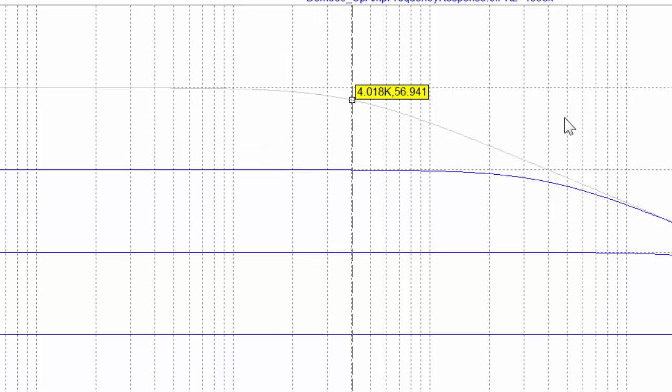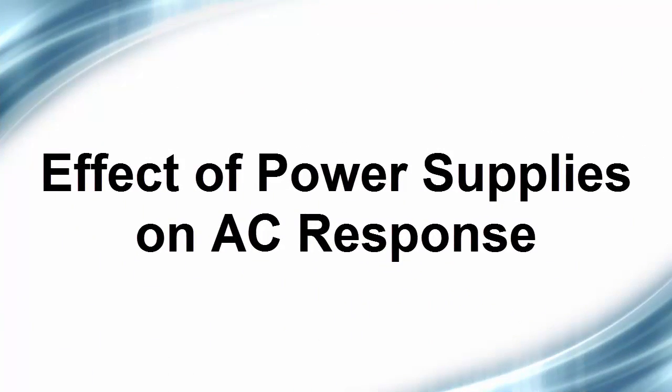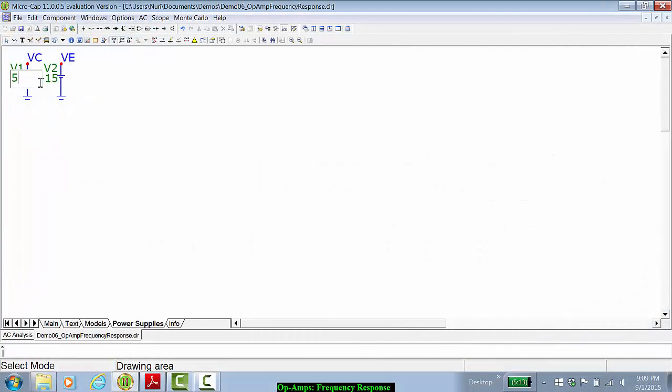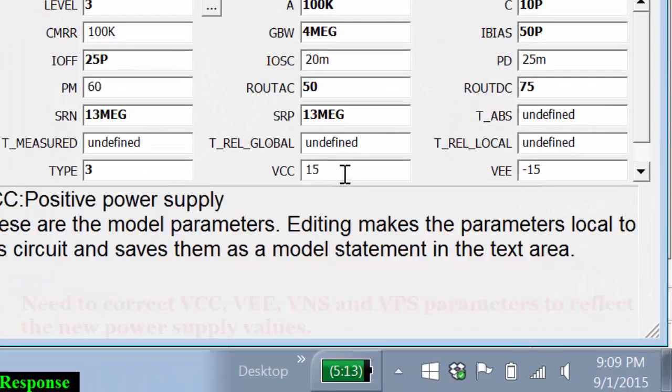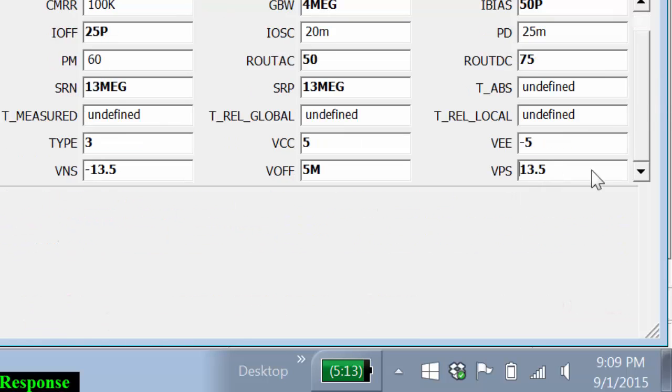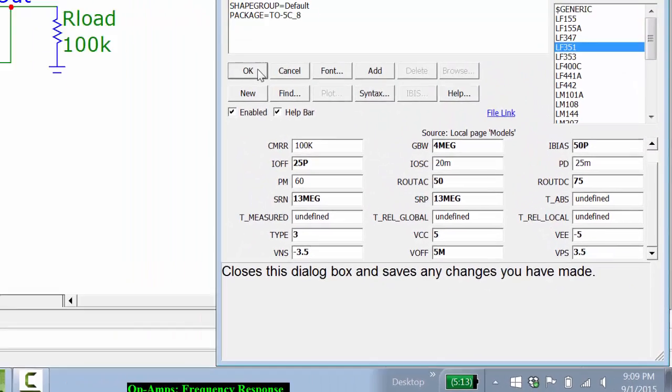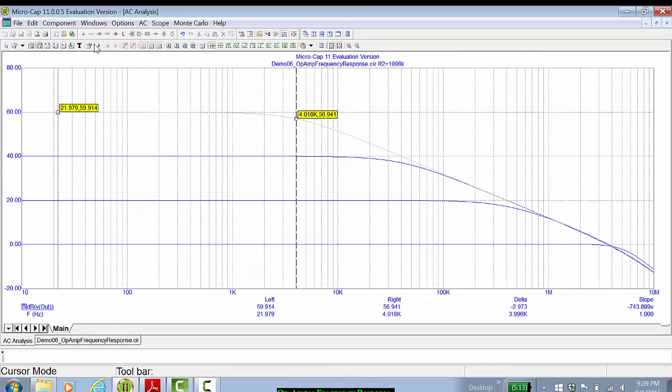As an example of the effect of power supplies on the AC response, let's change the power supplies to 5 volts. And then in the op amp model, let's correct these VCC and minus VE values to plus 5 and minus 5 volts, and the negative voltage swing to minus 3.5 and the positive voltage swing to plus 3.5. Click OK.